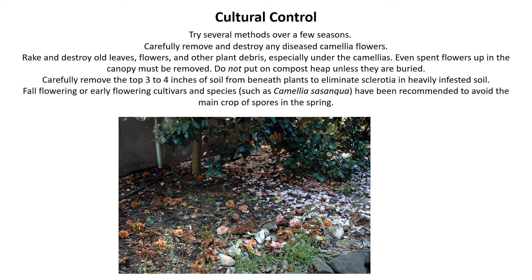You can carefully remove the top three to four inches of soil from beneath plants to eliminate sclerotia and heavily infested soil. Fall-flowering or early-flowering cultivars and species such as camellia sasanqua have been recommended to avoid the main crop of spores in the spring. This bottom picture shows an infected camellia plant where the blooms have turned brown and fallen off the plant.